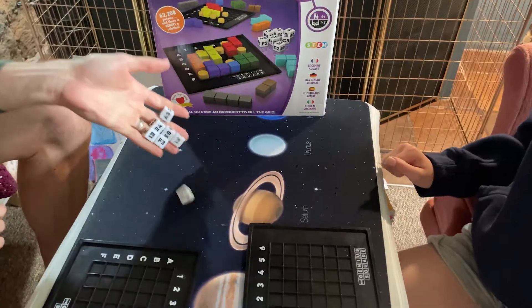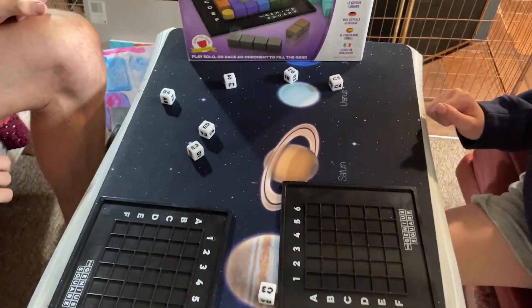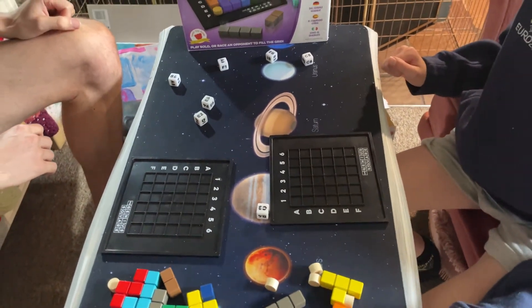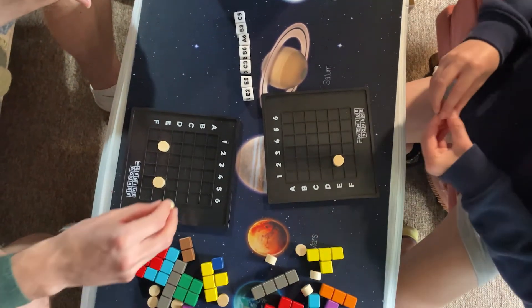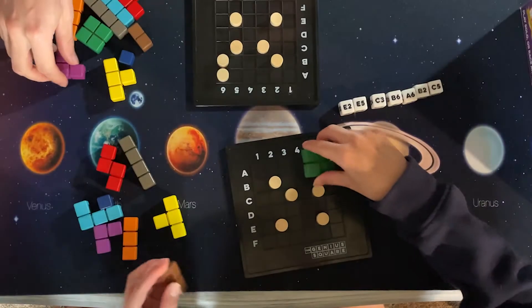The idea is that you first of all roll all of the six dice that are included and they will tell you how to fill out your grid with these small brown pegs, and you have to fill in the rest of the spaces then with the colored shapes. If you're playing it competitively,